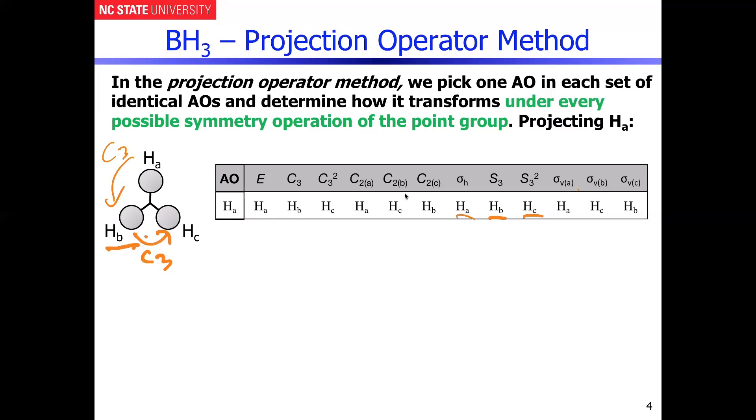And then of course, sigma V is going to be running, anything that runs down through A keeps it as A. If it runs down through B, like shown there, you can see that HA and HC will interchange and that's why you get HC there. And then finally, if you look down the other axis here, you will see that if you rotate through there, HA and HB will flip position. So HA becomes HC. And there we have it.